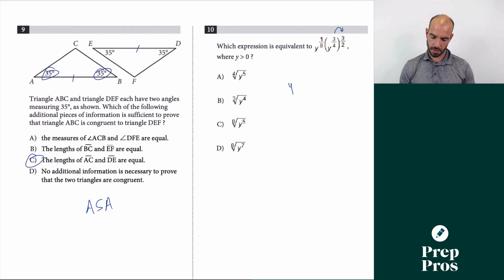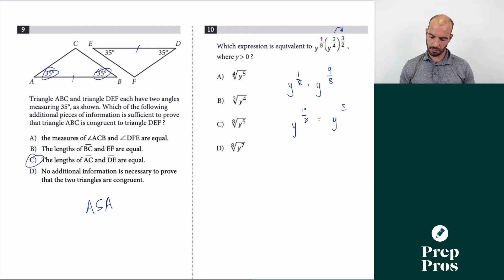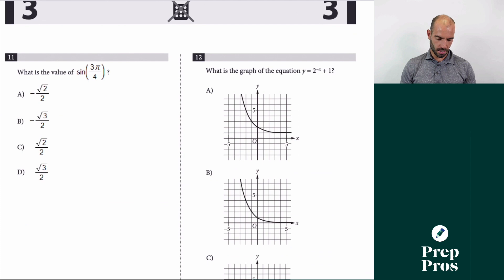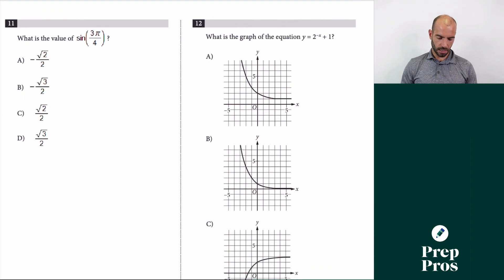Number 10 is exponent work. First simplify: power to a power gives y^(1/8) times y^(9/8). Same base, so we add exponents: y^(10/8), which simplifies to y^(5/4). We convert back to radical form using the root-power fraction rule — answer is A.